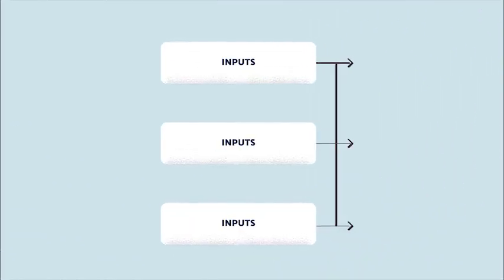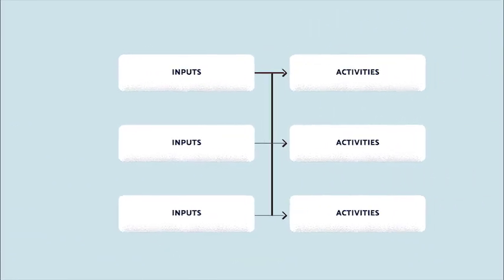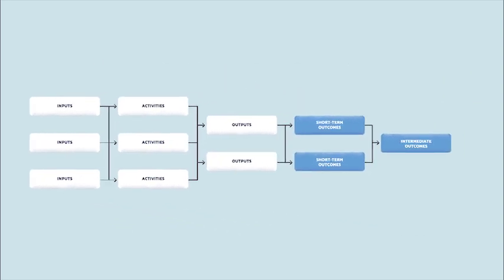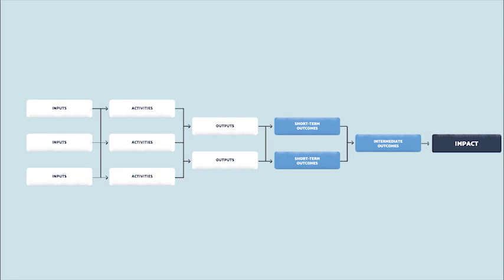In step two, stakeholders use a participatory process to create a logic model which visualizes how a health adaptation is expected to work. A logic model appears on screen with columns for inputs, activities, outputs, short-term outcomes, intermediate outcomes, and impact, each connected by arrows.